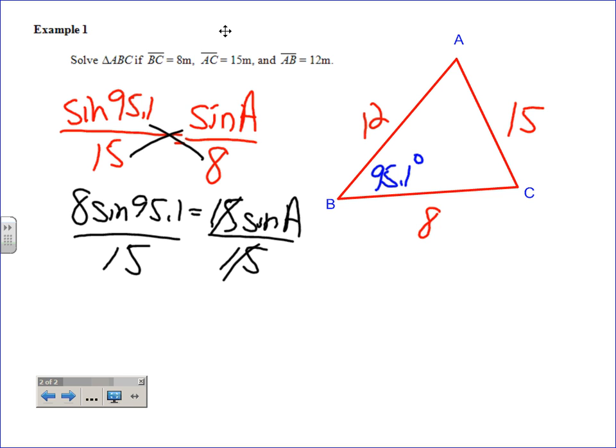Okay, so those cancel. And so we have 8 sine of 95.1 over 15. Is that going to give me the answer, or is that going to give me some decimal? That's going to give me a decimal. That's going to give me kind of the ratio of those sides. And I'm going to use arc sine to find out the actual angle. So let's go ahead and see what that thing comes out to be.